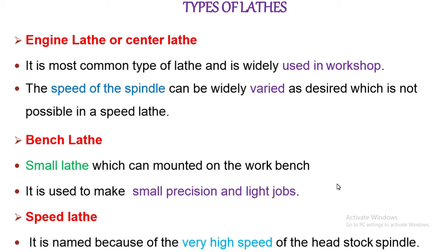The headstock of the engine lathe is much more strong or robust in construction — robust meaning very strong. It contains additional mechanism for driving the lathe spindle at multiple speeds.